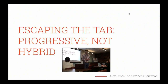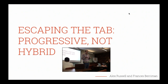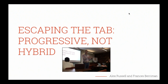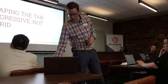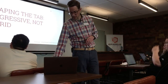Two people at Google wrote a paper called 'Escaping the Tab, Progressive, Not Hybrid' — that's by Alex Russell and Francis Bariman, I think around 2012. A question from the audience: where do Electron apps fall? Electron is kind of a hybrid app too — you're not writing it in native code like Objective-C on Mac or C# on Windows. Electron would be in that hybrid space.